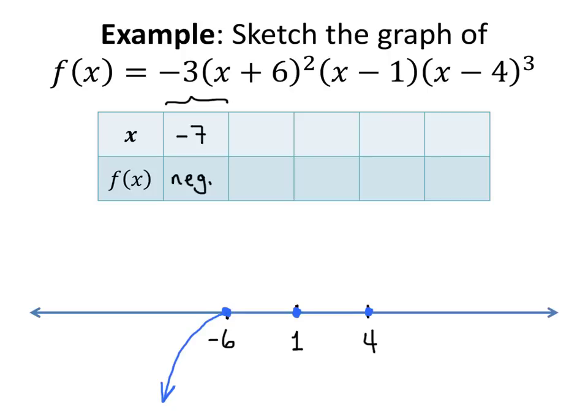Okay, so now what happens after negative 6? Well, in this next box, what I'm going to write is an x value that's between negative 6 and positive 1. And it could be anything, any value of x between negative 6 and positive 1. So for example, I could plug in x equals 0. And again, using my calculator, I can plug x equals 0 into this function, substitute it in for all those x's, and figure out what I get. But what I get is some negative number. It's not really important what negative number I get. What's more important is the fact that I get a negative number.